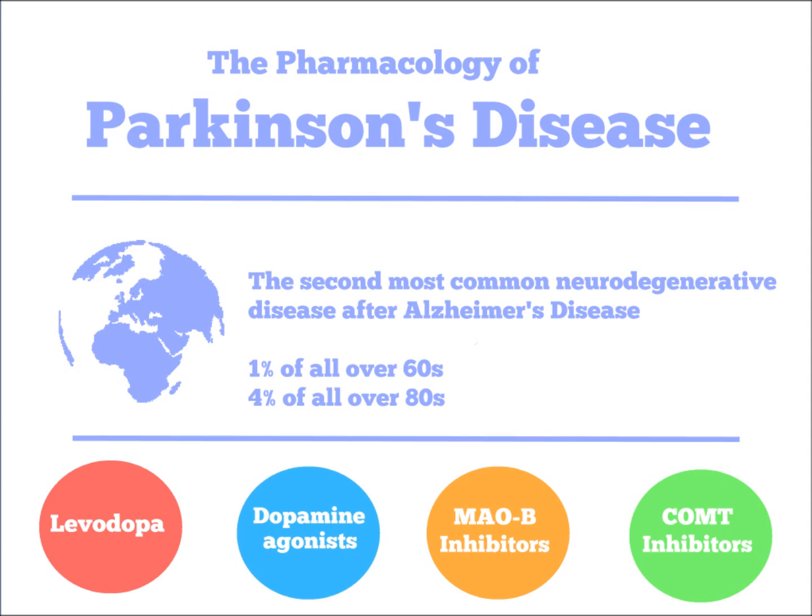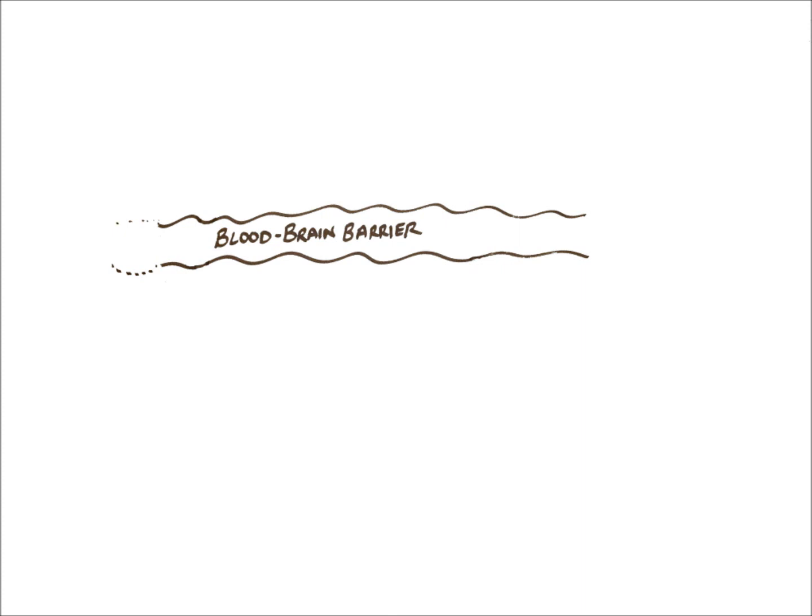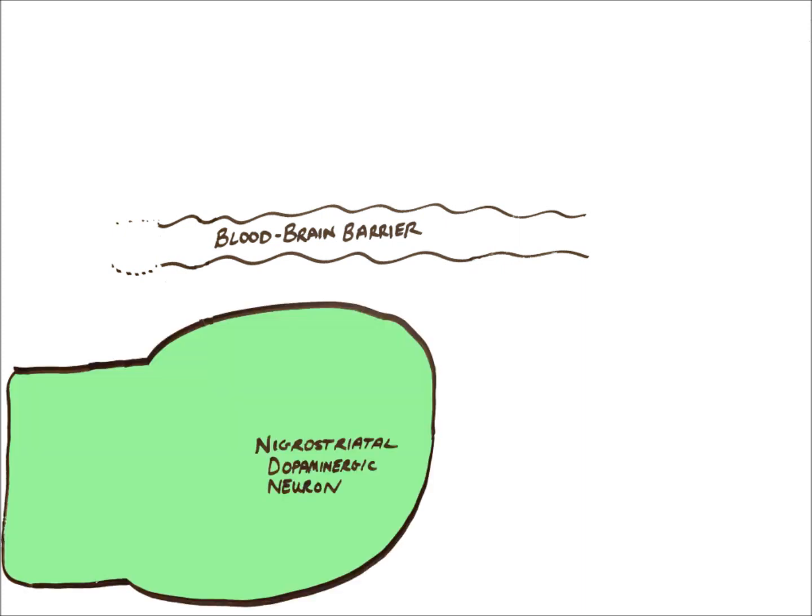Let's start off by introducing a simple representation of the anatomy and physiology relevant to Parkinson's disease. Here we have a representation of the blood-brain barrier, a nigrostriatal dopaminergic neuron which produces the neurotransmitter dopamine, and a neuron in the corpus striatum which upon activation by dopamine exerts its modulating effect on movement pathways, leading to smoother, more coordinated movement.